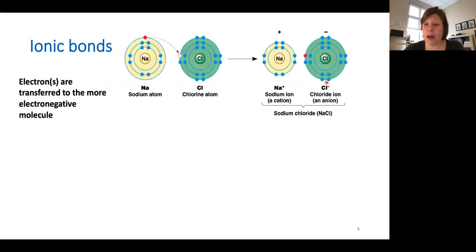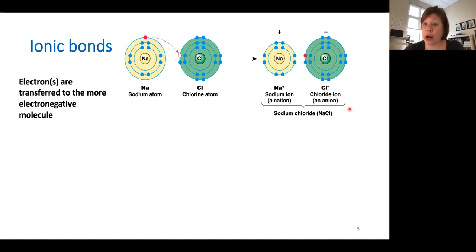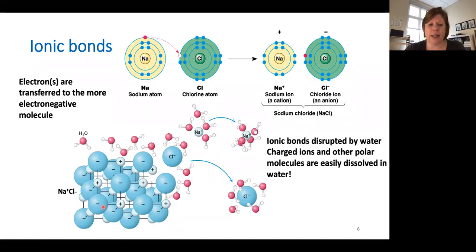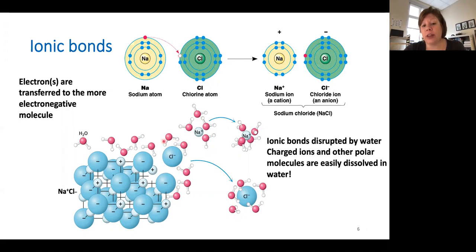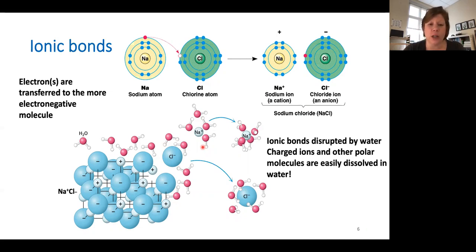Let's start by talking about ionic bonds. As we've already mentioned, ionic bonds occur when an electron is transferred from the less electronegative molecule to the more electronegative molecule. The result is that both molecules have a charge, but they're attracted to one another and tend to stick together like sodium chloride does. You can see this beautiful matrix of ionic bonds over here — they can be disrupted by water, because water has a dipole. Water has an oxygen group that is very electronegative and hydrogens which are much less electronegative. So water can come in and interact with each of these charged ions, dissolving the ionic bond. Ionic bonds are really easily disrupted by water, and many types of polar molecules are really easily dissolved in water — that's one of the reasons water is so important for life.